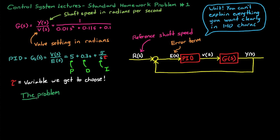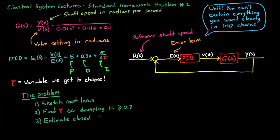And now we can finally get to what the problem is asking us to do. The first thing is that it wants us to sketch a root locus for the system, and we can do that since we're only varying one variable, tau. We also want to use that root locus plot to determine the value of tau required so that our system has a damping ratio no less than 0.7. Also we need to estimate the location of the closed loop poles of the system.